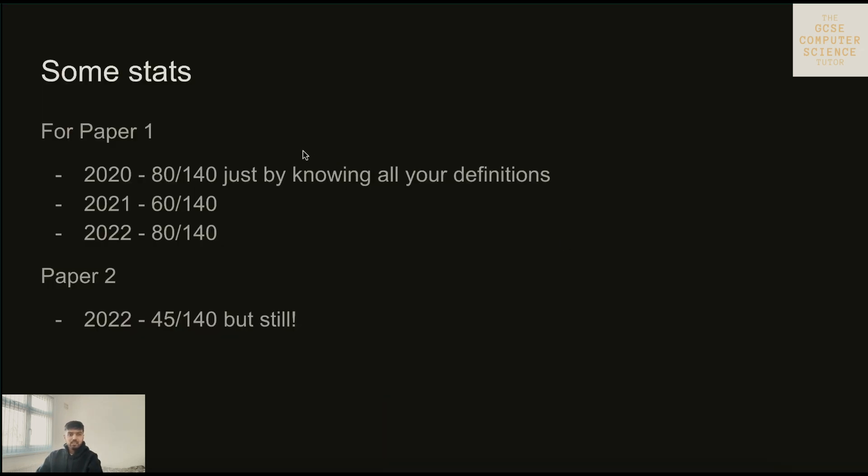Here are some stats for paper one. As you can see, 2020: eighty out of one forty marks were just by knowing all your definitions. 2021 it was around sixty, and again in 2022 they were around eighty. These include differences and similarities between two things. With the twelve markers I've only included the AO1, AO2 which you need to know - that's your definition marks. Even for paper two, I've just included 2022 for reference, but forty-five out of one forty you can just get by knowing your definitions. So learn your definitions using past paper exams. This is a very important tip.